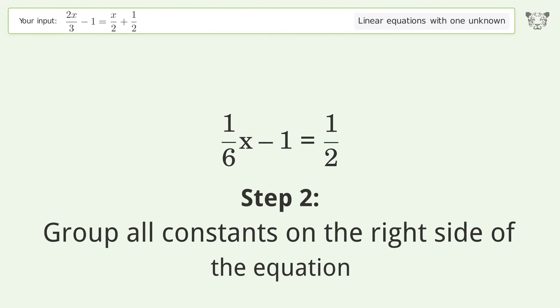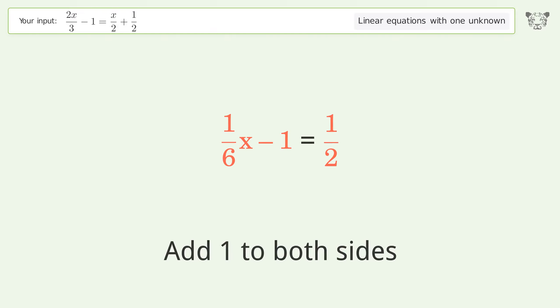Group all constants on the right side of the equation. Add 1 to both sides. Simplify the arithmetic.